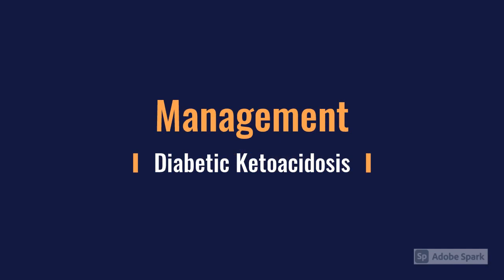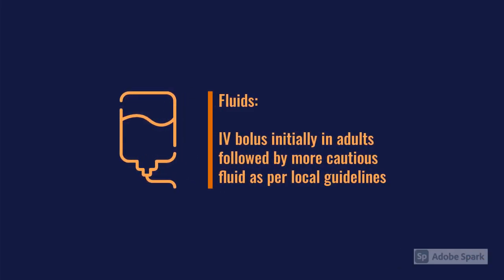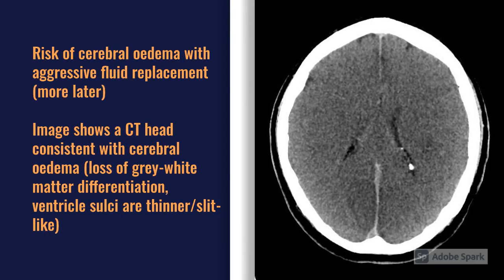Moving on to management, you start with an A to E primary survey, looking for things to immediately fix and manage. Sometimes these patients can come in in extremis. The hallmark of DKA management comes in a few forms. The first is IV fluids — check the blood pressure and start with a bolus. You then need to be more judicious and look at your local DKA guidelines, as there is concern that repeat boluses can raise ICP. So it's an initial bolus based on blood pressure, then titrate fluids according to local guidelines.